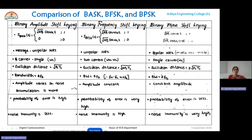In this comparison table, the first point: for ASK, the general expression is √(2Ps) · Ac·cos(ωct) when the data bit is 1, and the amplitude is 0 when the data bit is 0. For FSK, the expression is √(2Ps)·cos(2πfHt) when data is 1, and √(2Ps)·cos(2πfLt) or cos(ωLt) when data bit is 0. Similarly, the PSK signal is defined as √(2Ps)·cos(ωct) for data bit 1, and √(2Ps)·cos(ωct + π) when data bit is 0.